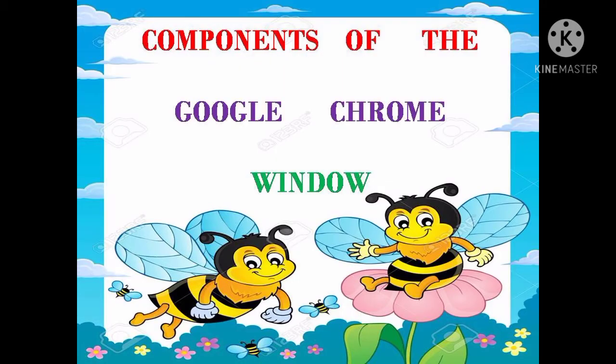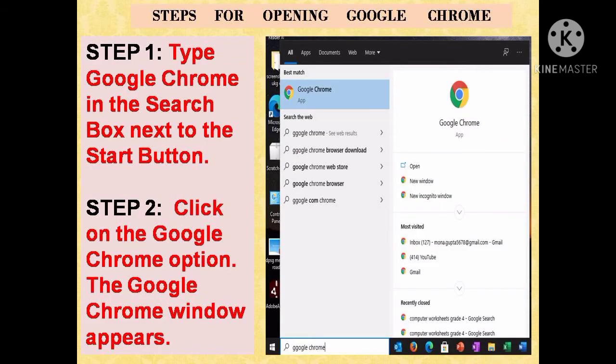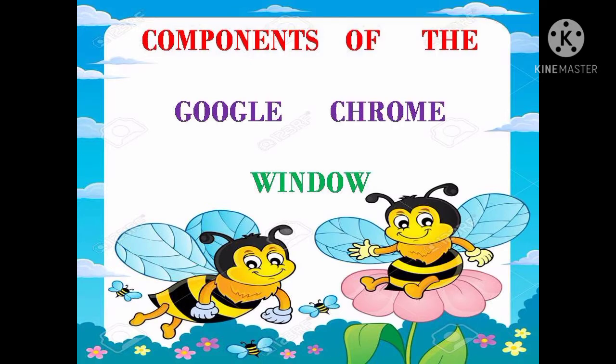Steps for opening Google Chrome. As you see in the picture, the first step is to type Google Chrome in the search box next to the Start button. Step 2: click on the Google Chrome option — the Google Chrome window appears. You will write Google Chrome in the search box next to the Start button, click on the Google Chrome option, and your Google Chrome window will open.